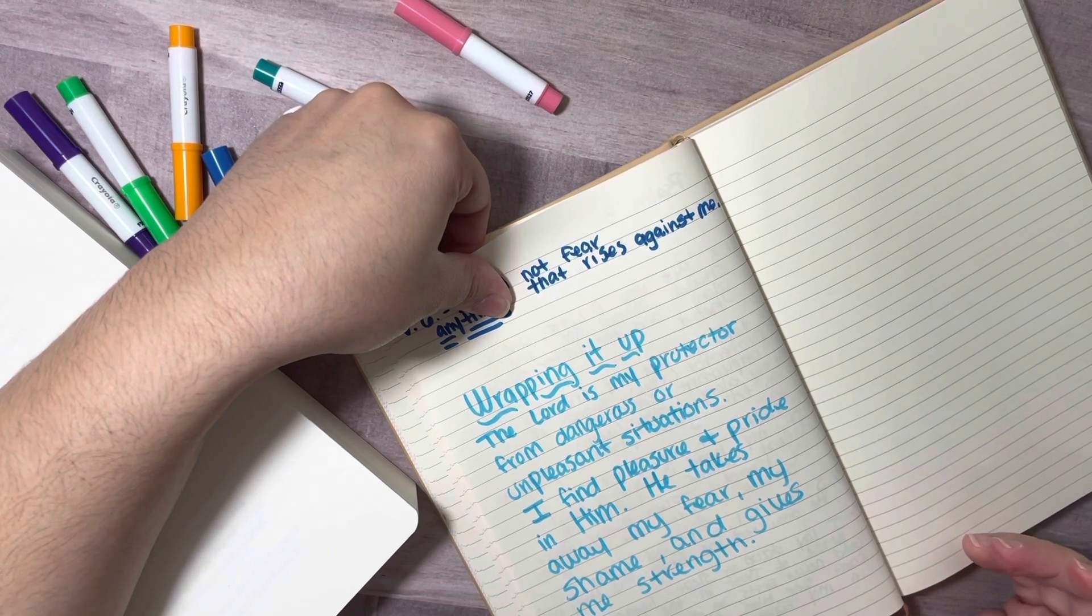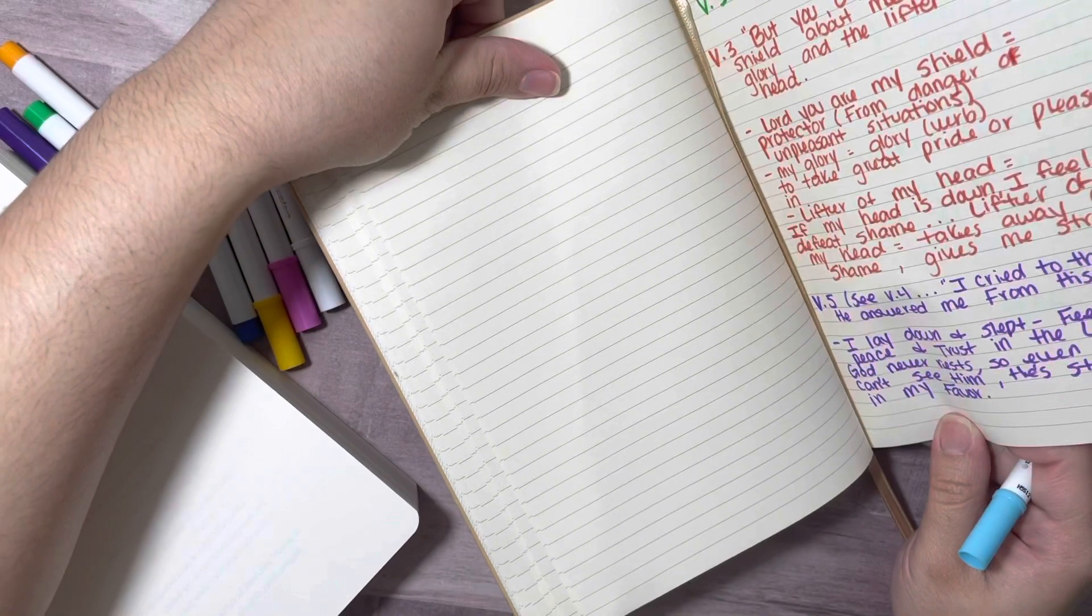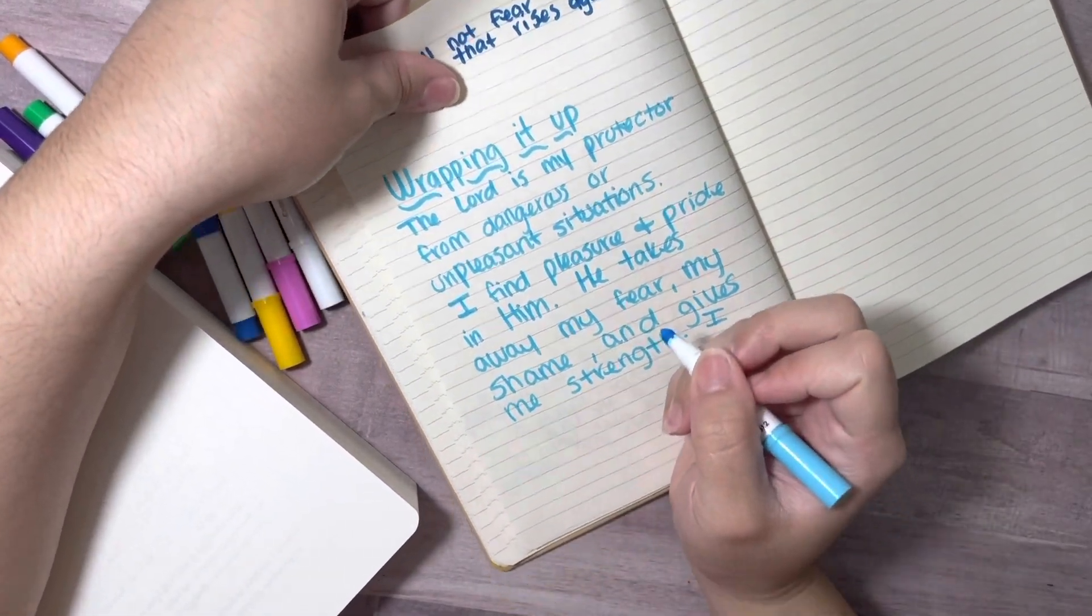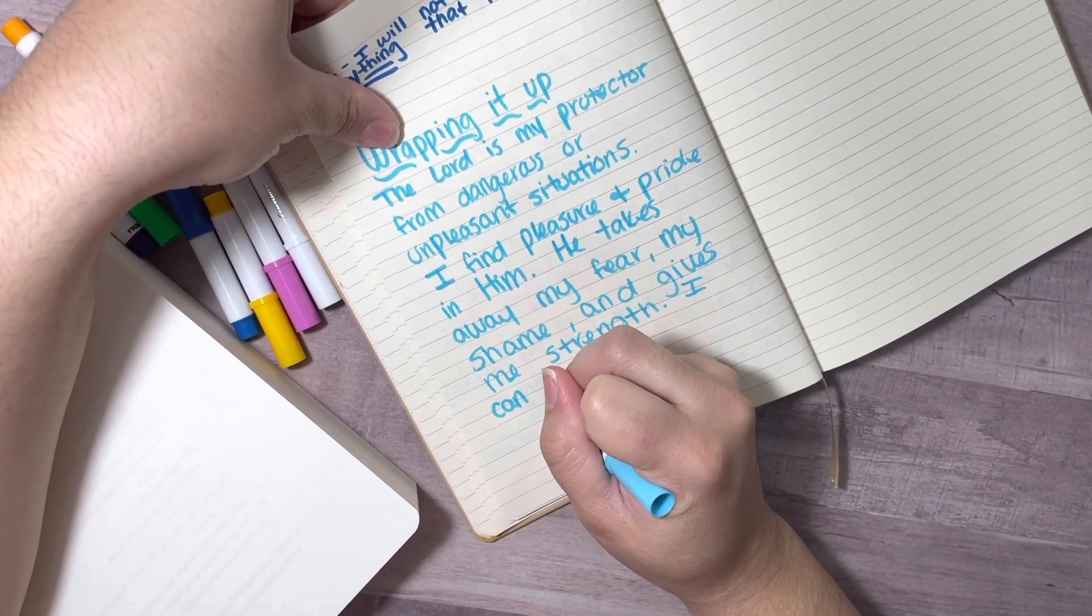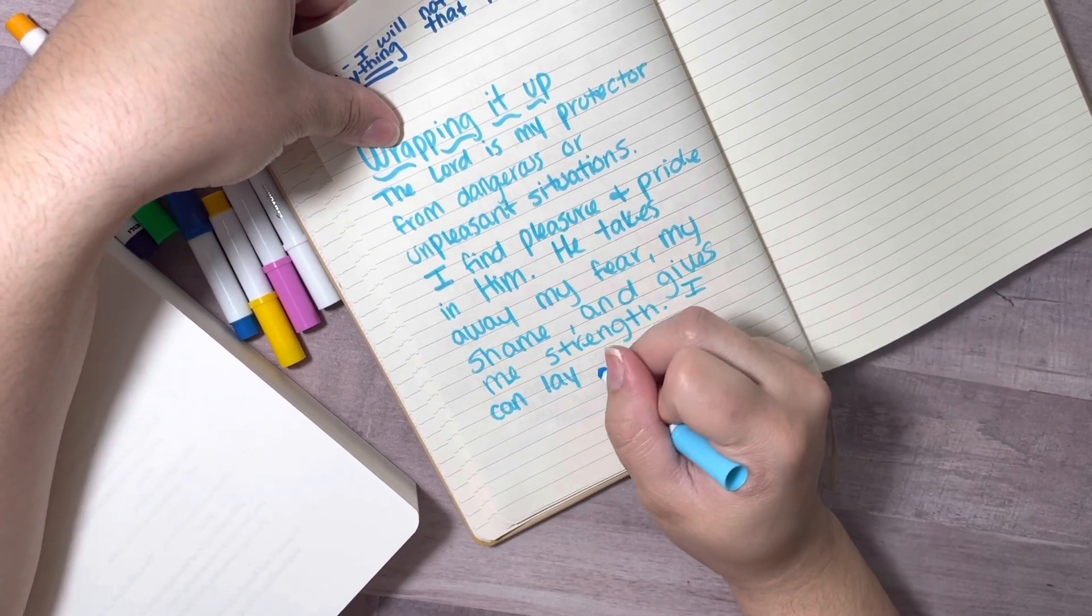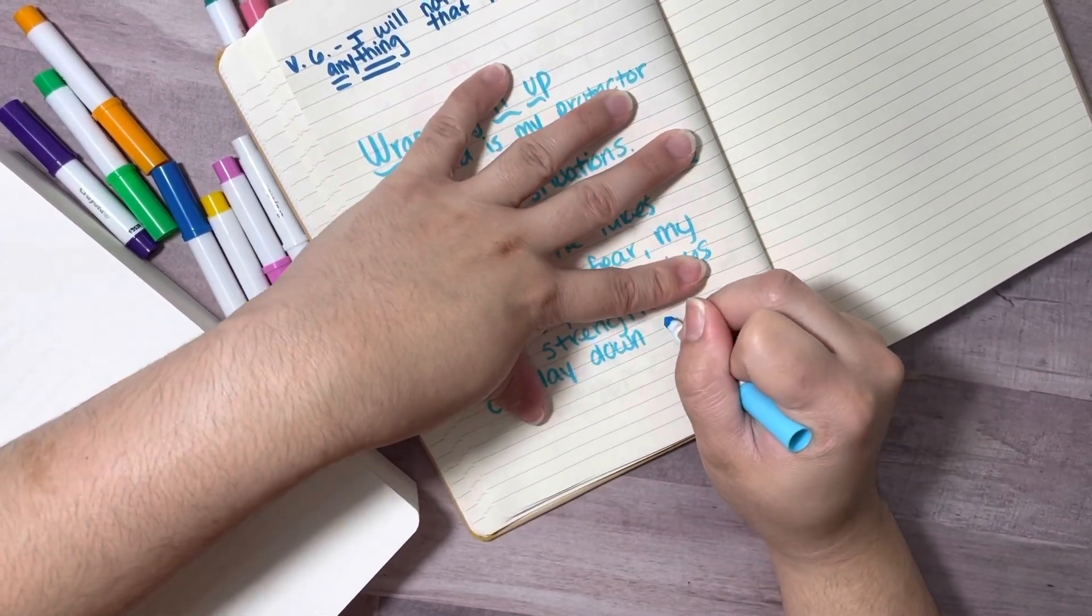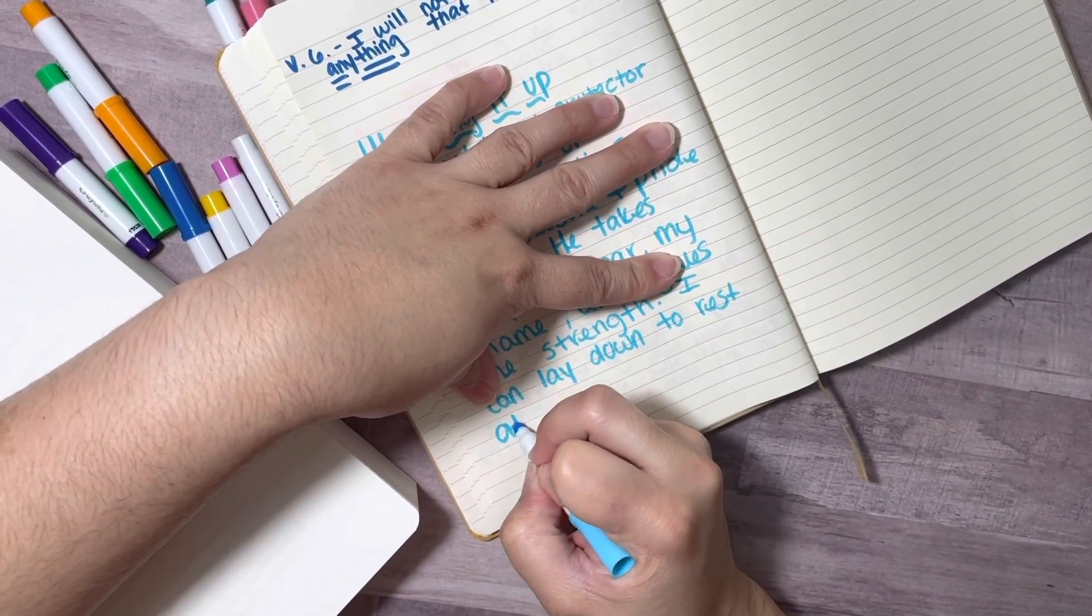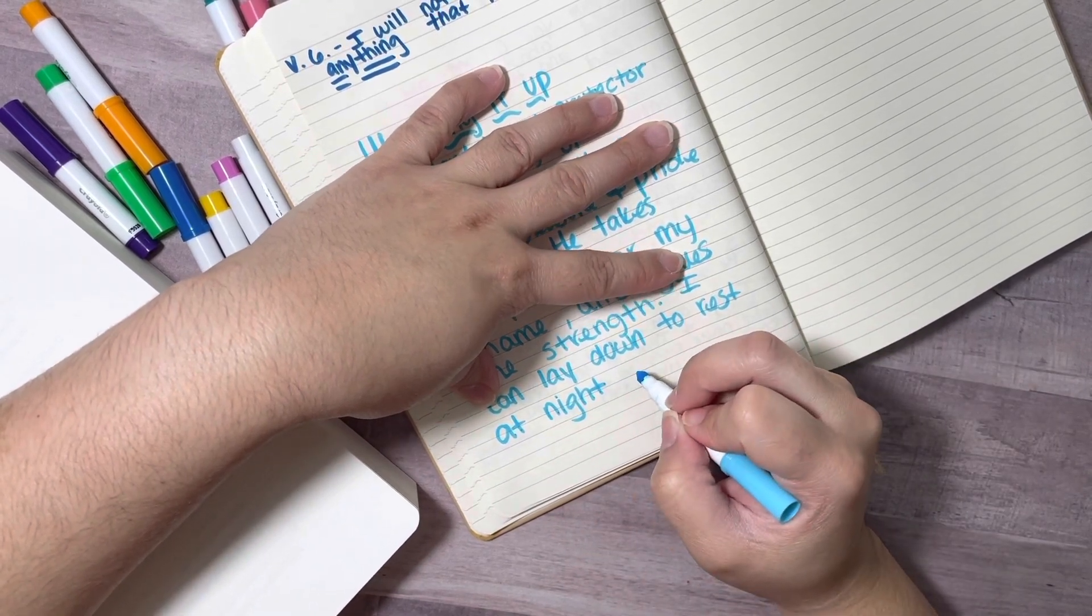And I usually take my notes on a journal on the side, like you see me journaling here on the side, and then I'll illustrate in my illustrating Bible. In this case, I am going to be illustrating in my illuminated scripture journal. So there is going to be a second part to this video. I'm calling this a part one of the Bible journaling process. There's going to be a part two. And the part two is the illustrating part. So you guys are going to see that in the next video.